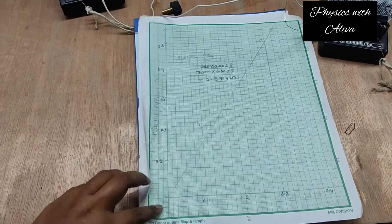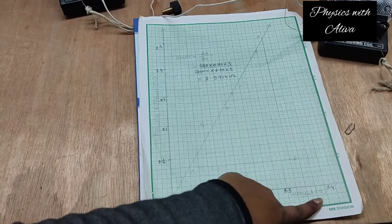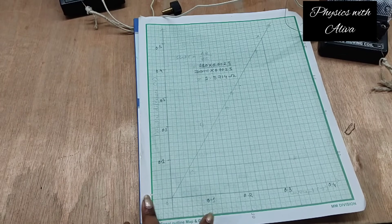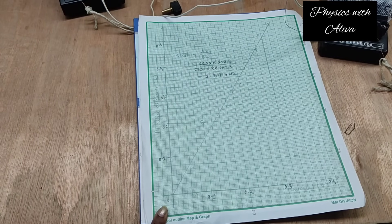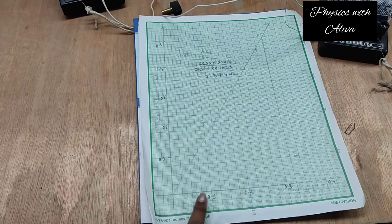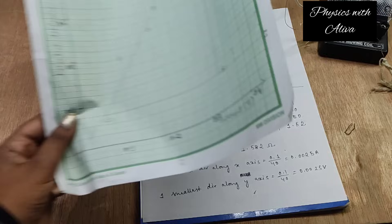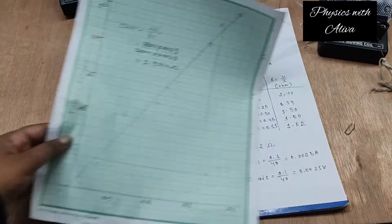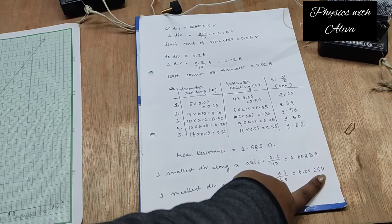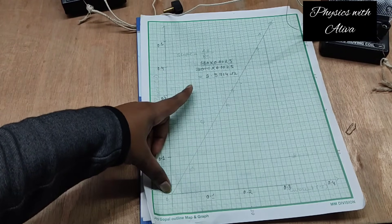This is our graph. We have taken the x-axis as the current axis and the y-axis as the potential difference axis, with units written. We have taken 40 divisions as 0.1 in both x-axis and y-axis and started the graph from the origin (0, 0). We have to start from the origin because in Ohm's law the graph should pass through the origin. One smallest division along the x-axis equals 0.1 divided by 40, which means one smallest division equals 0.0025 ampere, and one smallest division in the y-axis equals 0.0025 volt. We have plotted the graph and drawn a straight line passing through the origin as the best-fit average line.